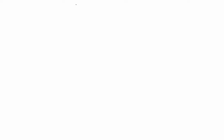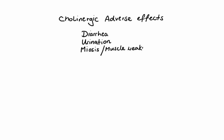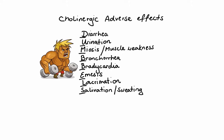To end, let's cover the side effects associated with cholinergic agonists. The adverse effects result from overstimulation of cholinergic receptors and include: diarrhea, urination, miosis and muscle weakness, bronchorrhea, bradycardia, emesis, lacrimation, and salivation. A great mnemonic to remember all of these common side effects is DUMBBELLS — it's right in front of you.